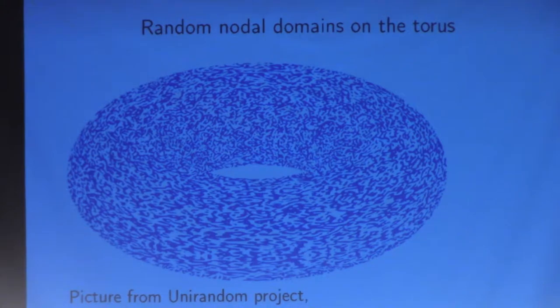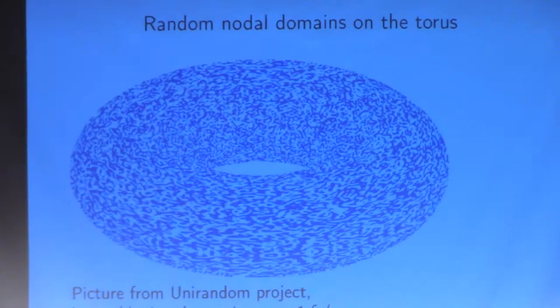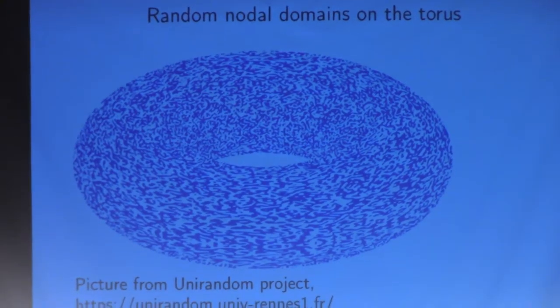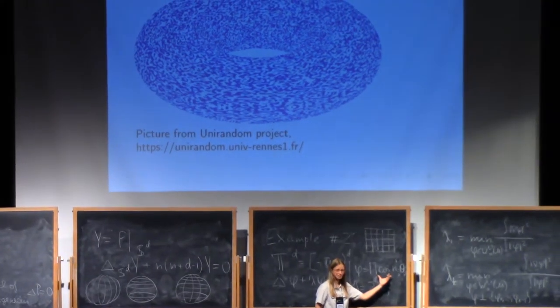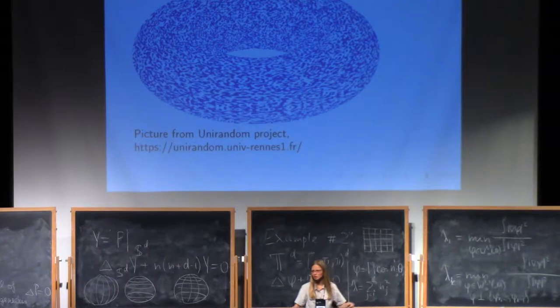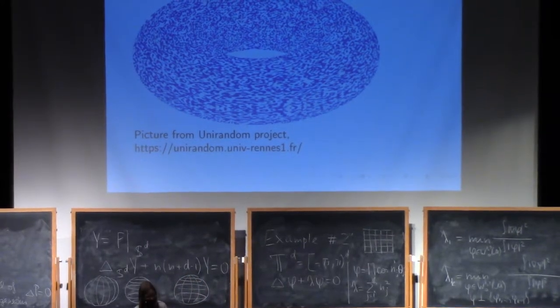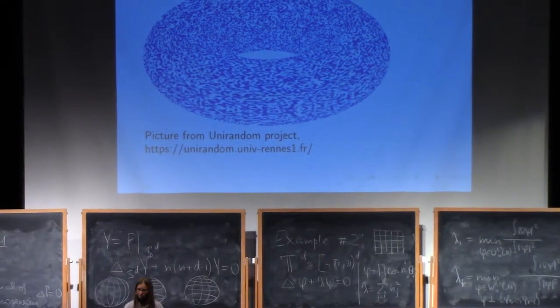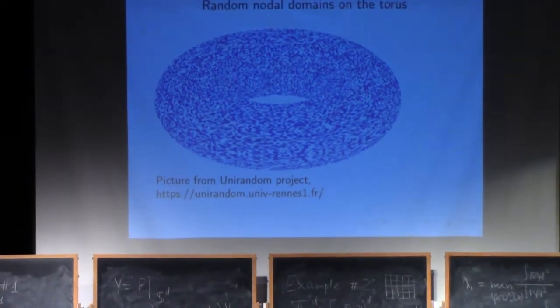And finally, the last illustration, it's a very beautiful picture. You take these elementary eigenfunctions, and you take a linear combination with random coefficients. So normalize it in L2, for example. I think this is illustration when you try to do it on your computer with randomized coefficients.